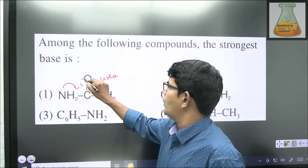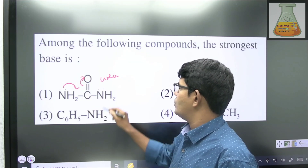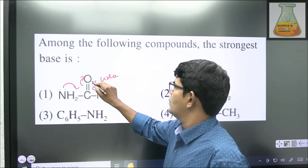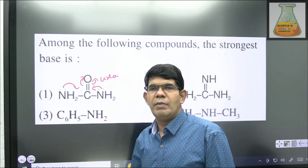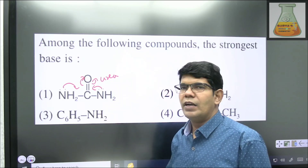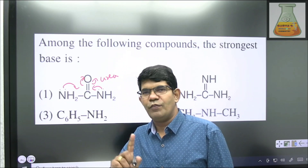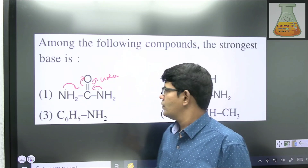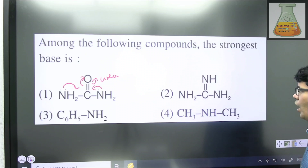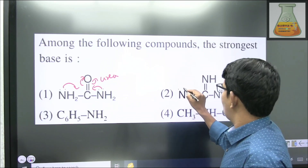Because there is lone pair–pi conjugation, you would not expect this nitrogen's lone pair to actively donate. So this is not a strong Lewis base. Let us move to the second compound, which is something different.